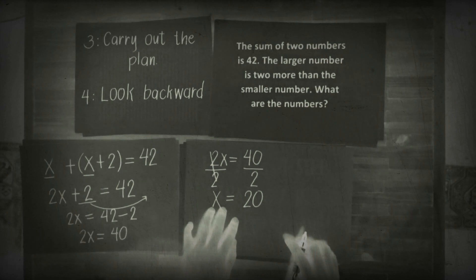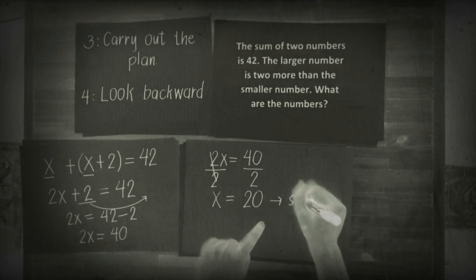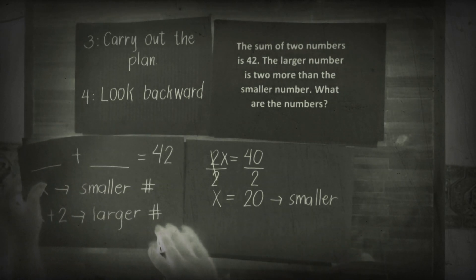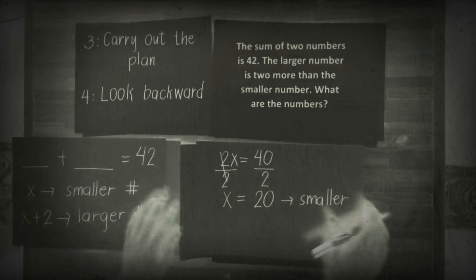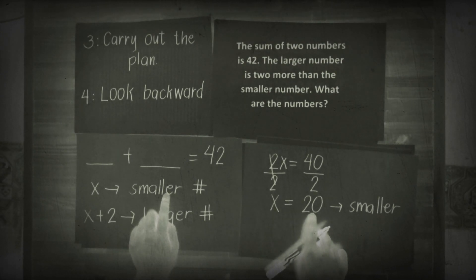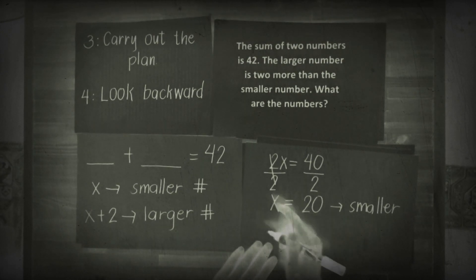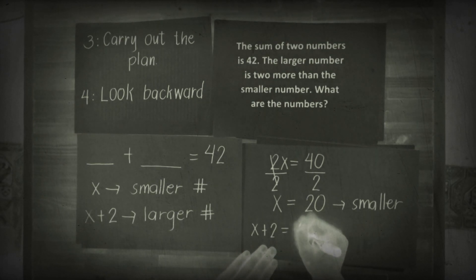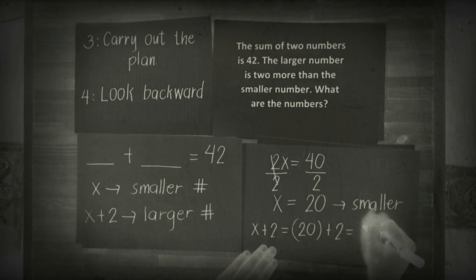If you got the value of x already, therefore you can also get the value of your larger number. This one is considered as your smaller number. Based on your plan, you have x equals 20 as the smaller. For x plus 2, that's 20 plus 2, which equals 22. So this is the first value and this is the second value, the larger one.